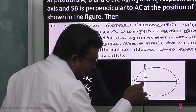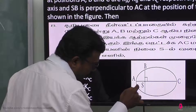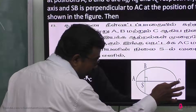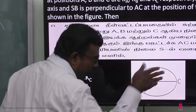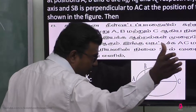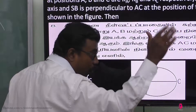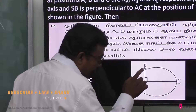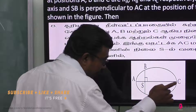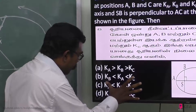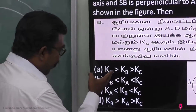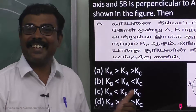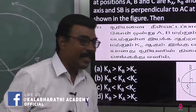The planet has to move faster at the closest point. Since kinetic energy equals half m v squared, a higher velocity means higher kinetic energy. Therefore Ka is the highest, then Kb, then Kc. So Ka is greater than Kb is greater than Kc — the first condition is the correct answer.